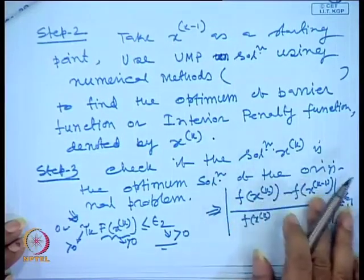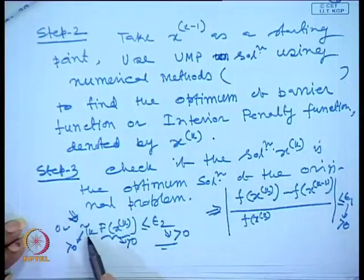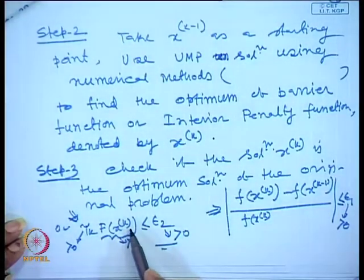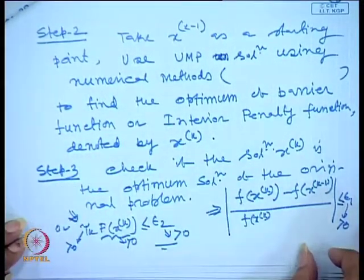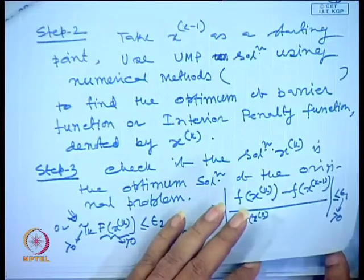If you solve by analytical method and want to express the variables x1, x2 in terms of the penalty coefficient, it is very tedious for a higher number of decision variables. After solving, you check the optimality condition: if the function value does not change and tau_k times f(x_k) is less than epsilon, with tau_k > 0 and f(x_k) > 0, then you can stop. This means we have reached the optimal solution using the interior point method.